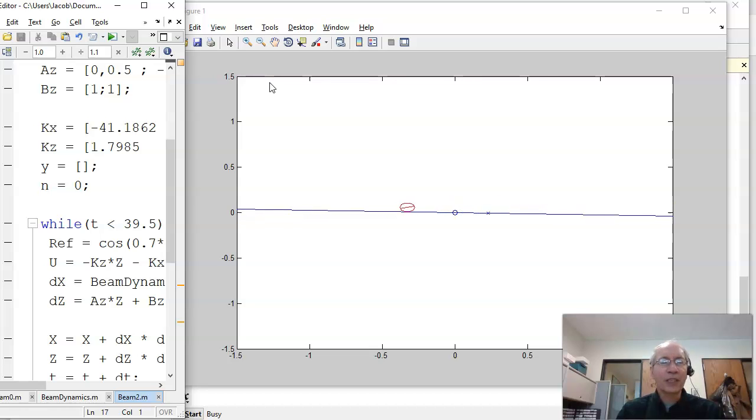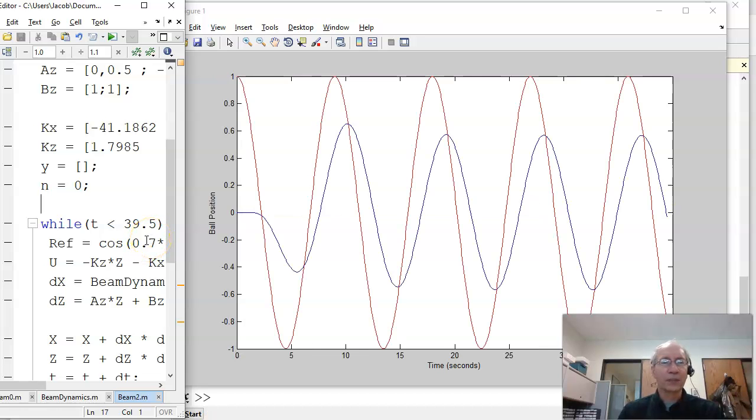That's the problem with the servo compensators. If you got the frequency wrong, the compensator is wrong. What I would need to do is redesign my servo compensator so AZ has poles of plus minus j.7. Recalculate kx, kz. Then it would work. But if my setpoint changes frequency, again, it doesn't work anymore. Plus, this will track a sine wave but not a constant. The other one tracks a constant but not a sine wave. Something to think about.